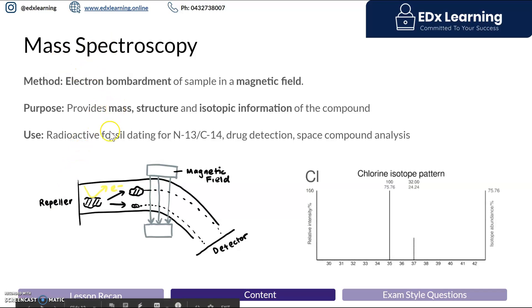The key point is that mass spec provides very accurate information about mass and structure. One additional feature it has compared to other spectroscopy techniques is it can also provide isotopic information. You can see that with the chlorine mass spec graph here.